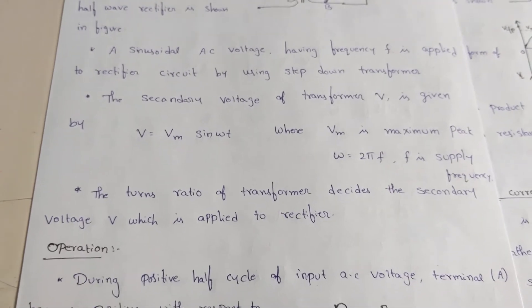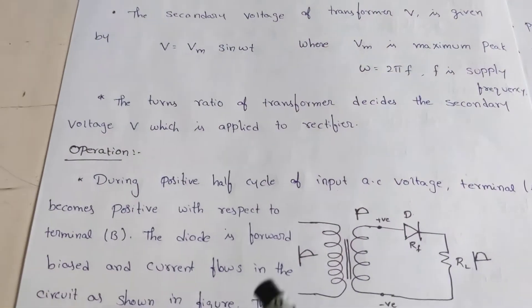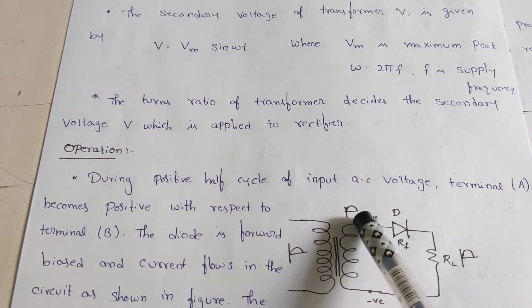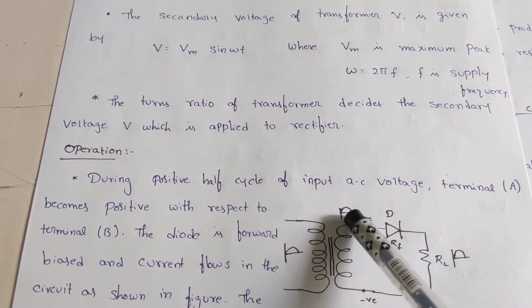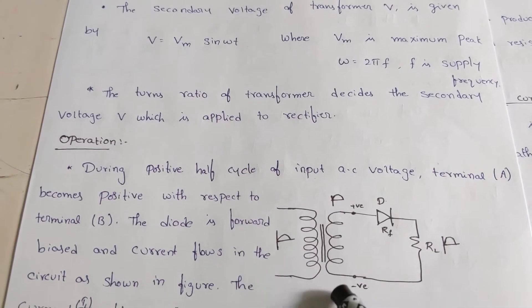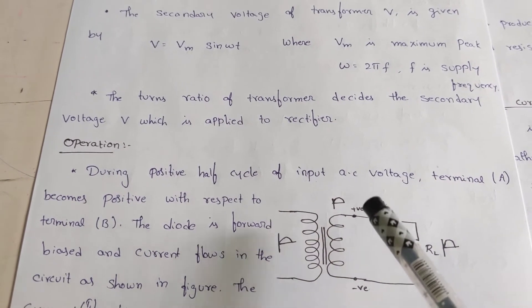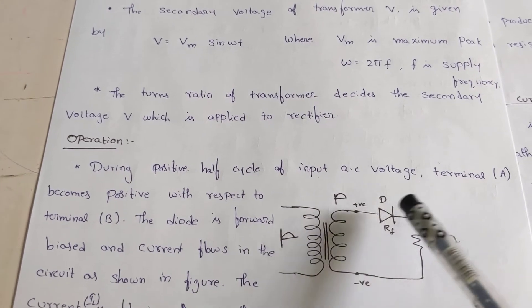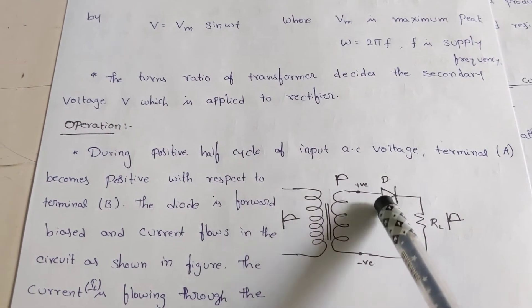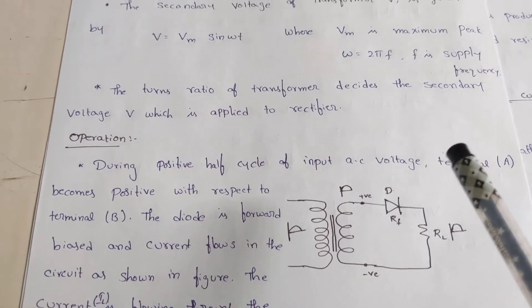There are two operations: forward bias and reverse bias conditions. When you apply a positive peak to your transformer, the positive terminal appears at one end and the negative at the other, with a 180-degree phase shift. As per the diode working principle, it conducts when the anode is positive with respect to the cathode, so current flows from anode to cathode. At this moment the diode is in forward bias condition — it is short-circuited and current flows to your load resistance.